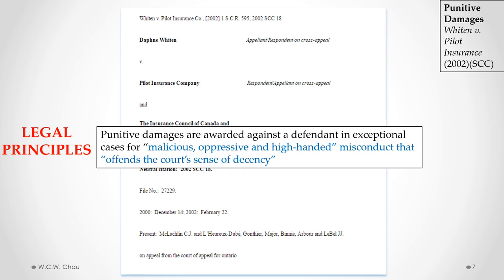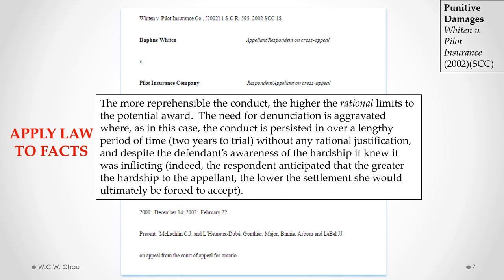The legal principles from this case are that punitive damages are awarded against a defendant in exceptional cases for malicious, oppressive, and high-handed misconduct that offends the court's sense of decency. The Supreme Court of Canada said that the more reprehensible the conduct, the higher the rational limit for the potential award of punitive damages. They noted that the need for denunciation is aggravated where conduct persisted over a lengthy period — in this case, two years up to the date of trial.